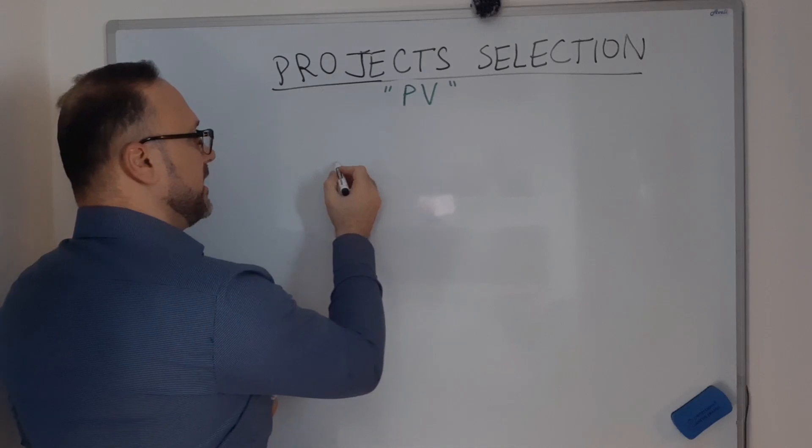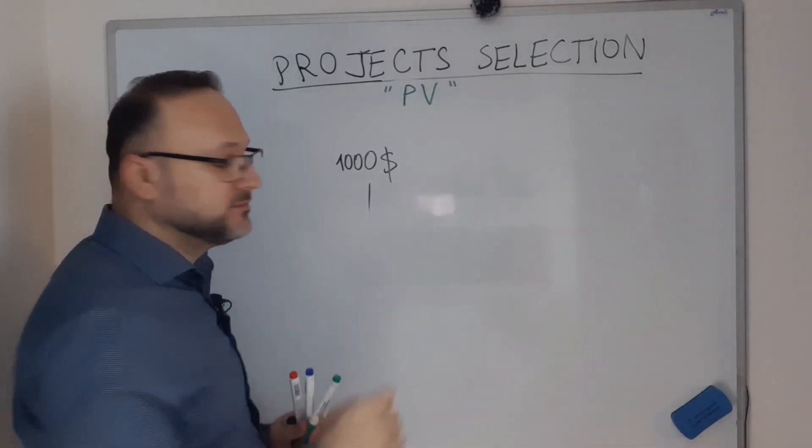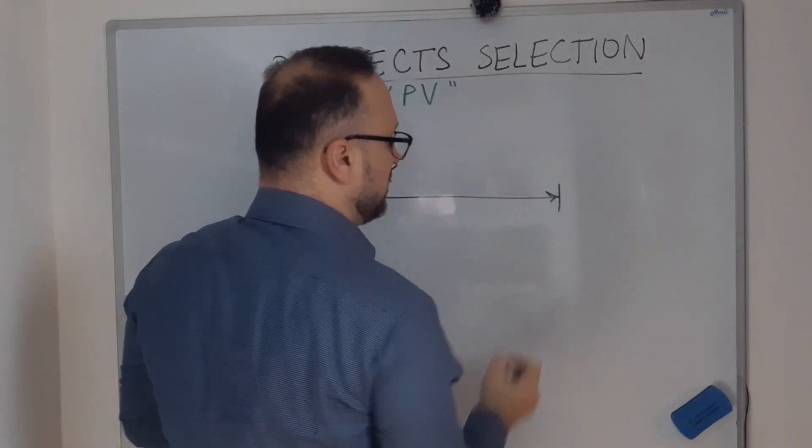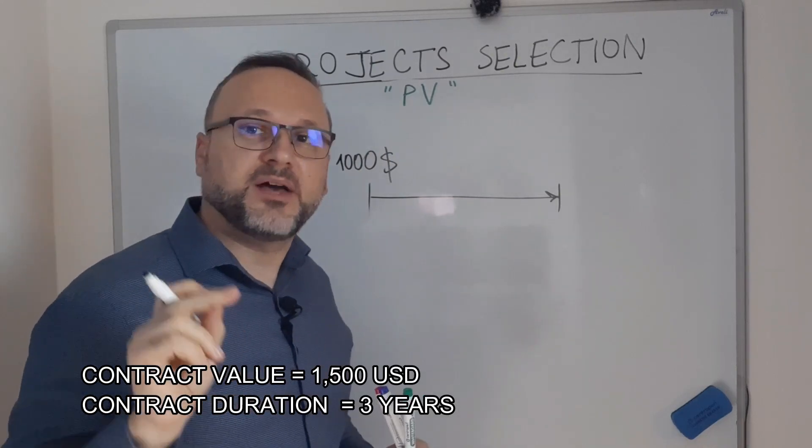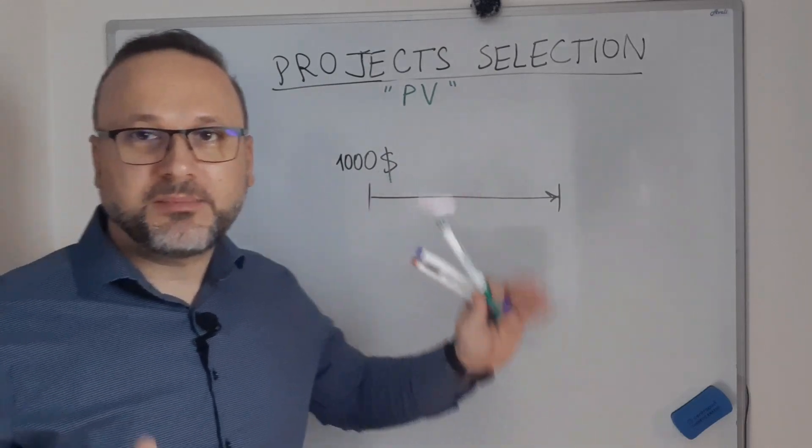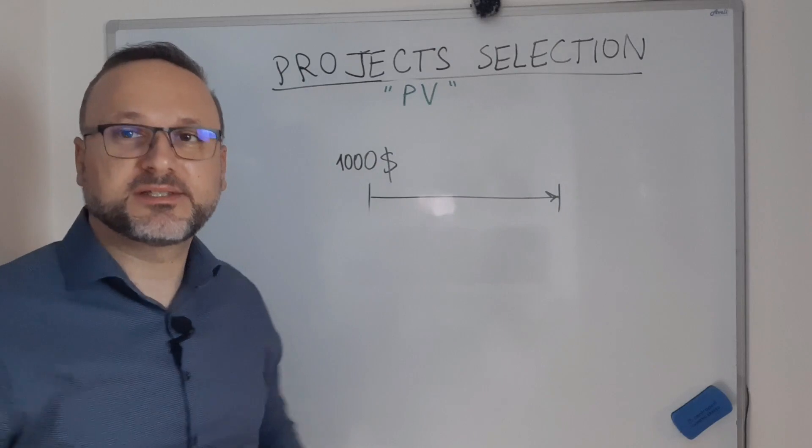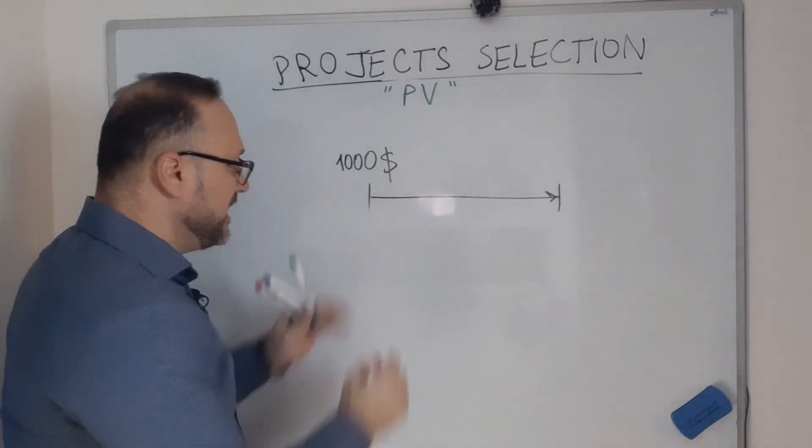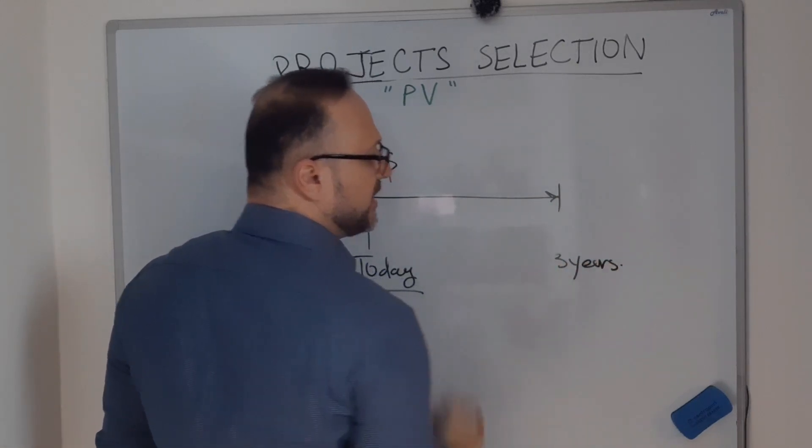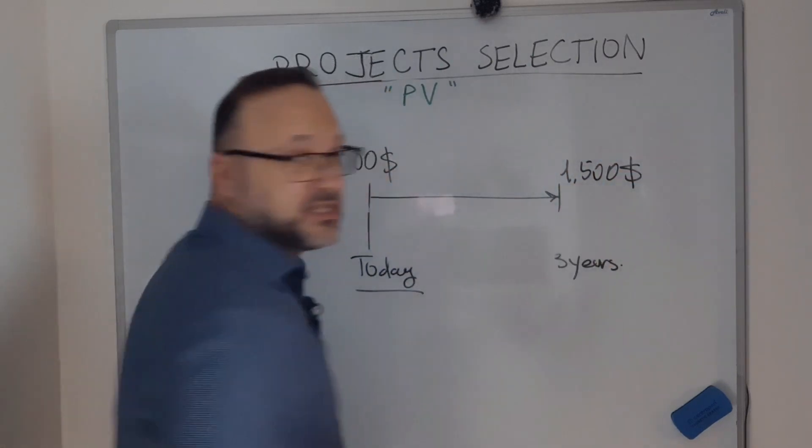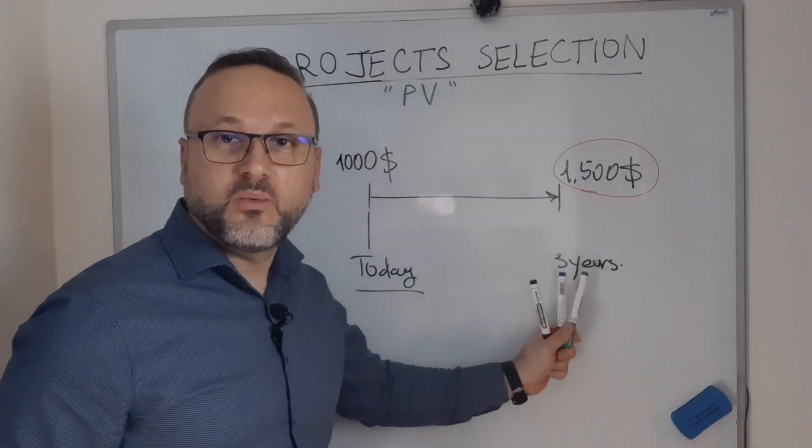The example is I have $1,000 to be invested today, and the contract of project A is saying that within three years I will get $1,500. Now we will talk about $1,000 just for simplifying these figures - it could be 1 million, 10 million for big projects - but let's consider $1,000 to be invested today, and within three years I will get $1,500.